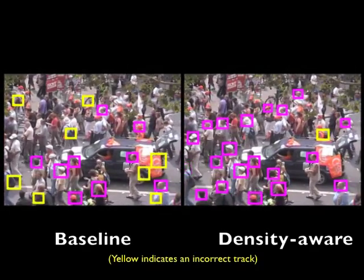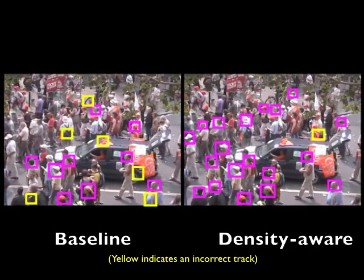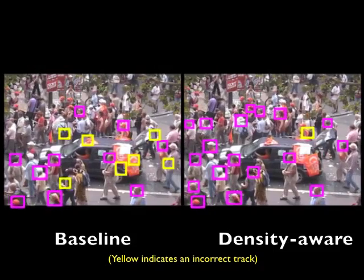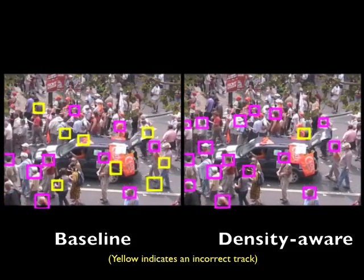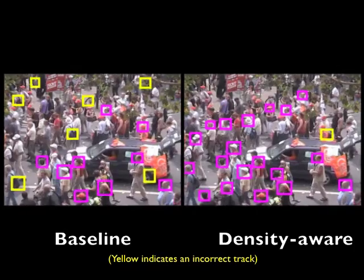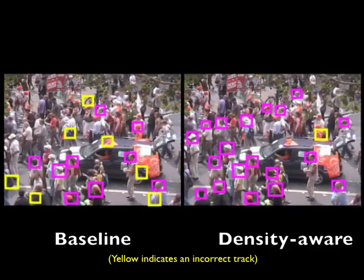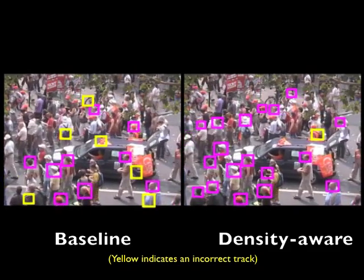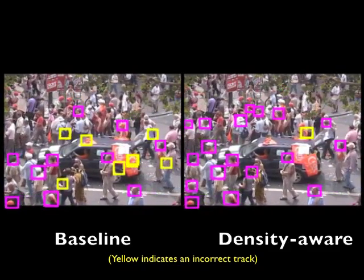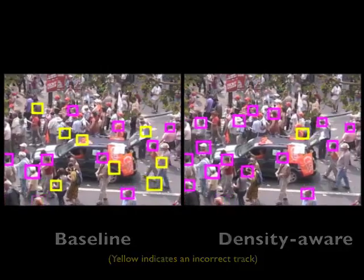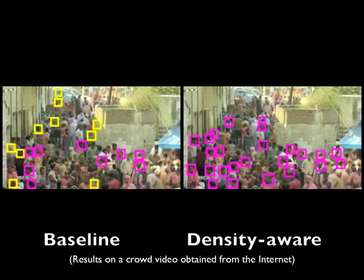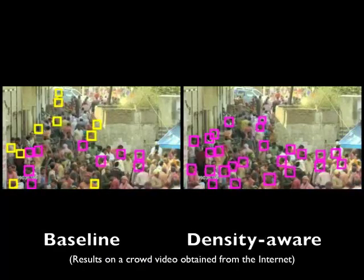Here we see results for a wide field of view crowded sequence. We have shown that density estimation can be used to improve detection and tracking in crowded scenes. Our energy formulation is general enough to allow for the incorporation of additional constraints. Please see the paper for quantitative analysis.